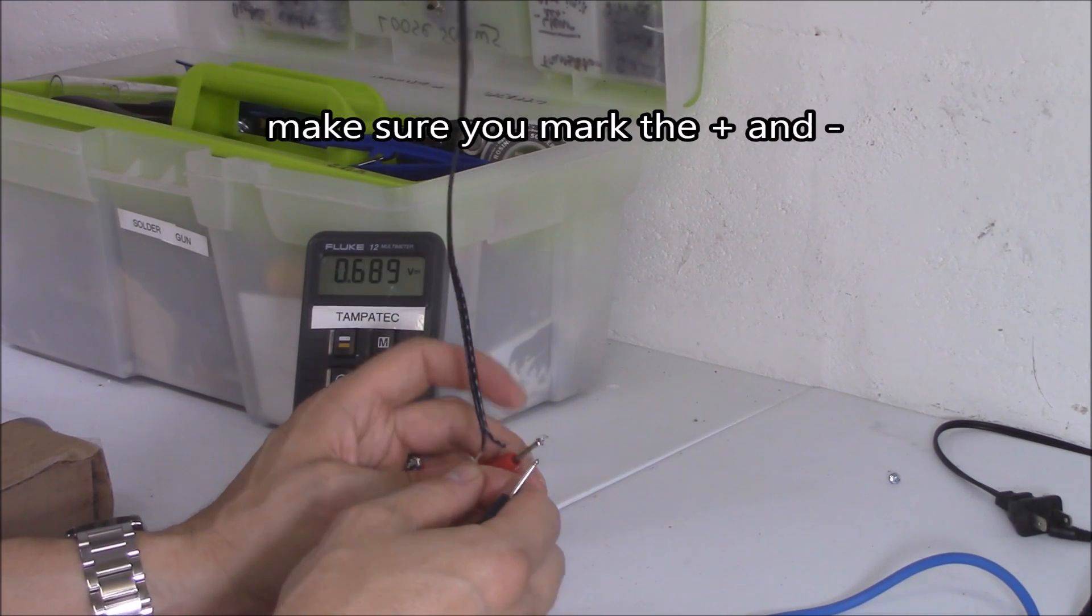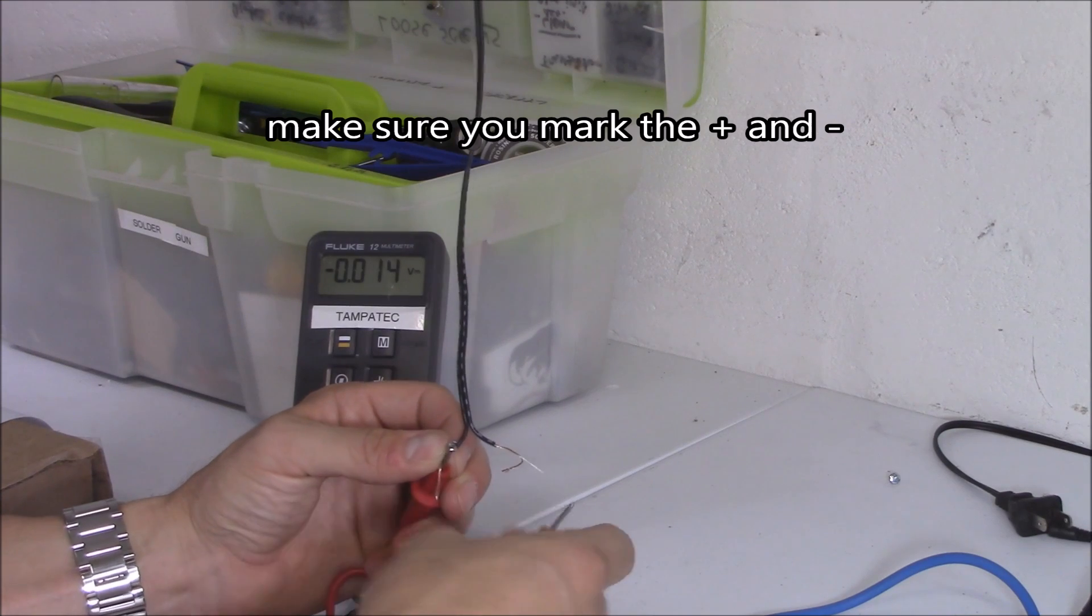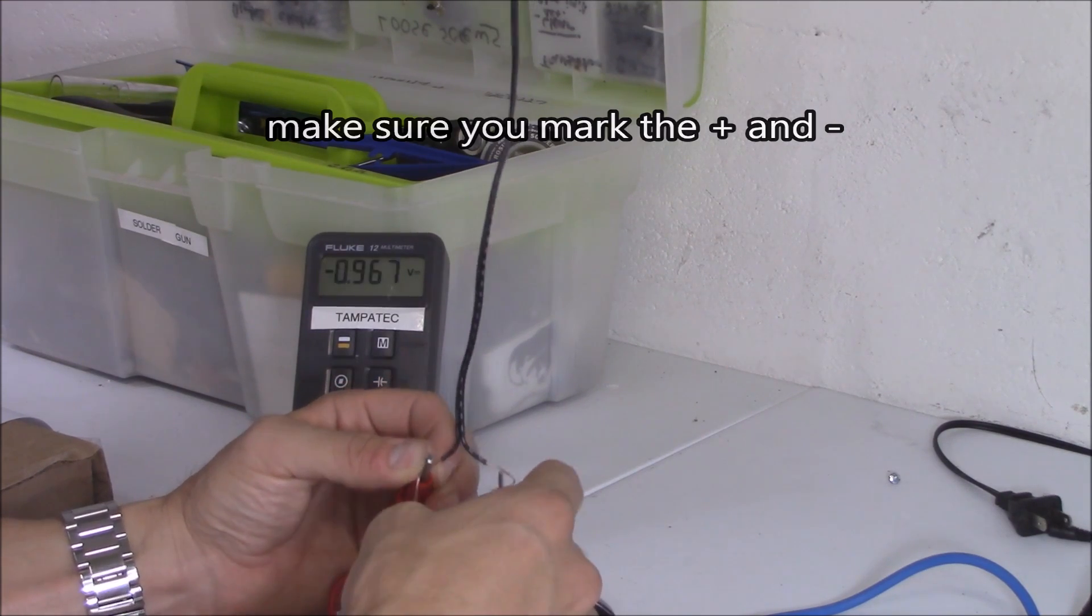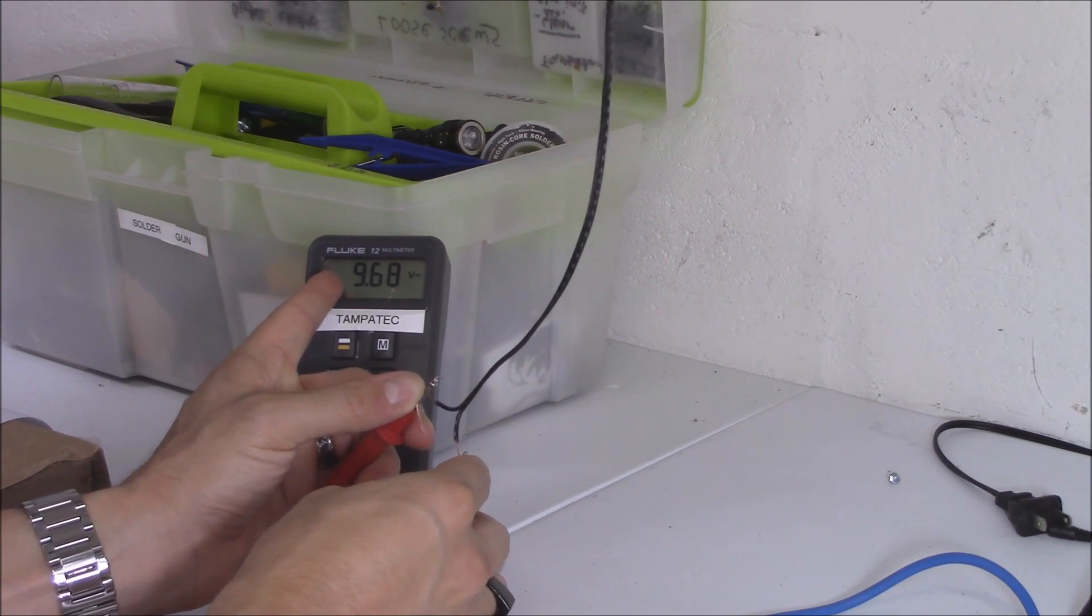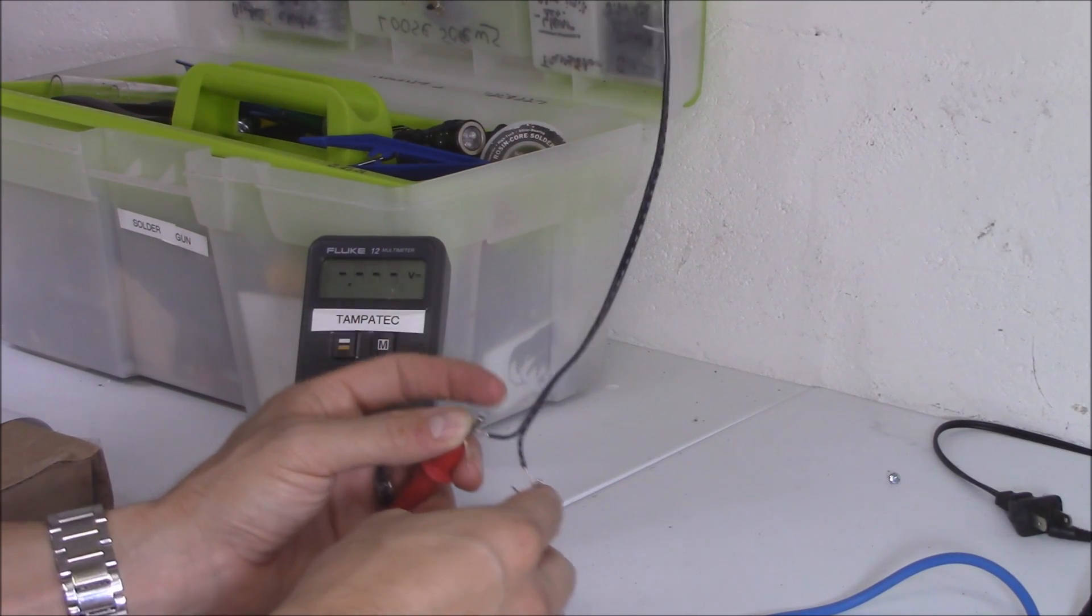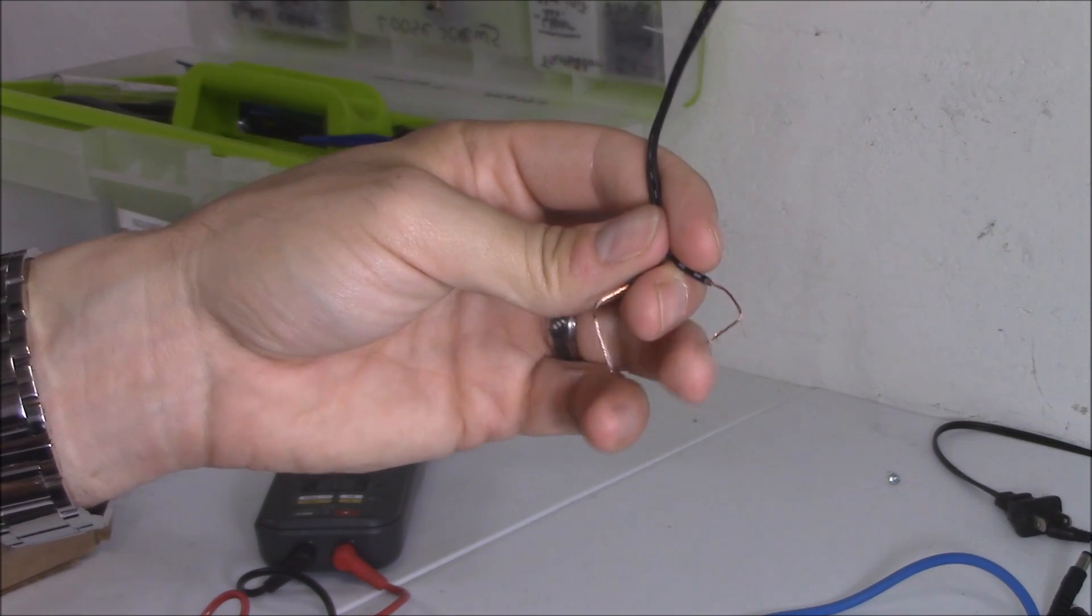Now, if you got it backwards, it would say negative. With the stripe right here, it would say dash 9.6, 9.8 volts. So now that we know what side is negative and positive on this side where the AC adapter side is.